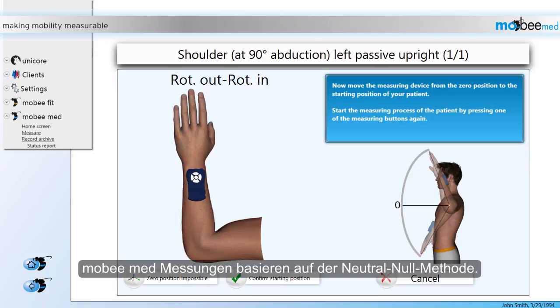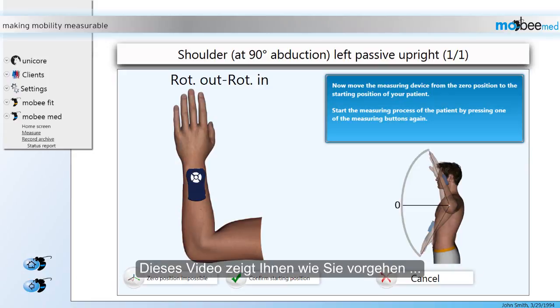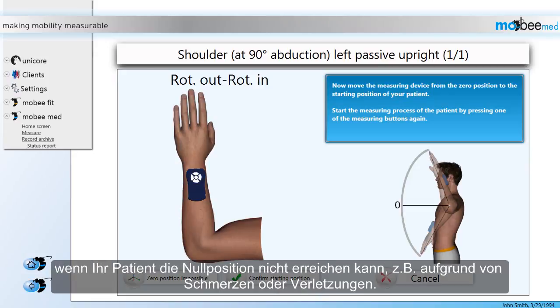MobiMid measurements are based on the Neutral Zero method. This video is going to show you what to do in case your patient cannot reach a zero position due to pain or previous injuries, for example.